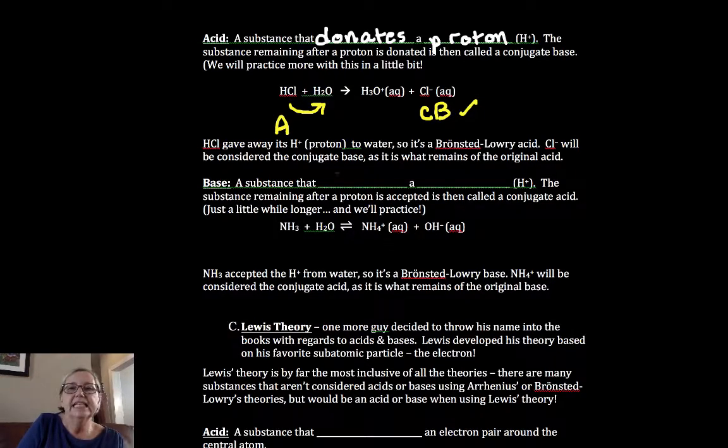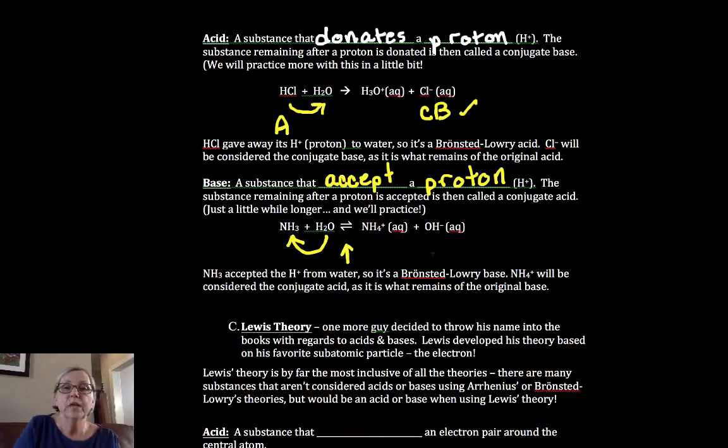Now, a base is the substance that accepts, has a drive to accept a proton. Note here, I put a double arrow because ammonia is a weak base, but it will accept a proton from water. It's going to accept an H and a plus, so it became the ammonium ion.